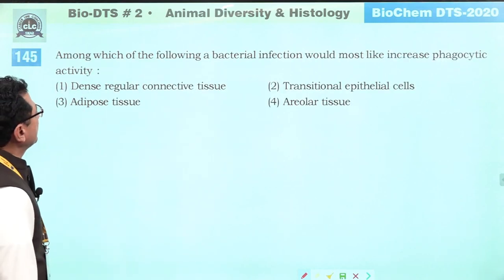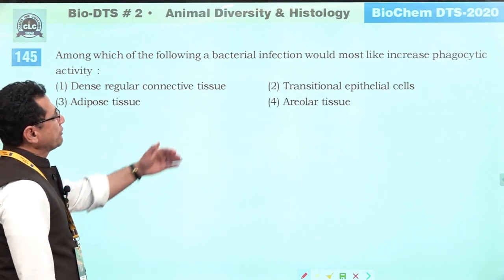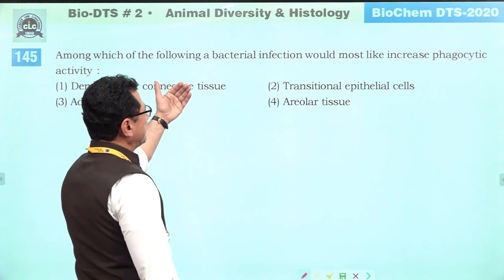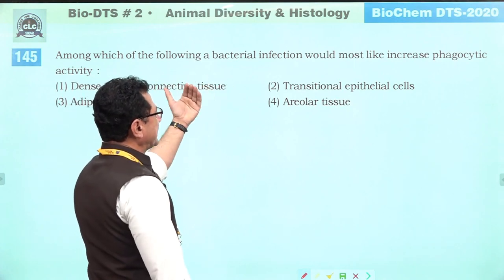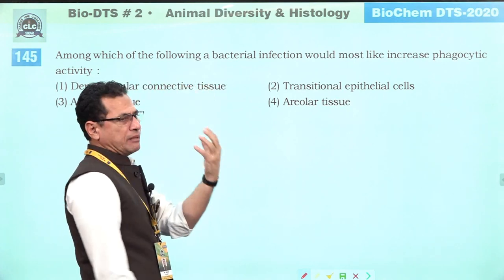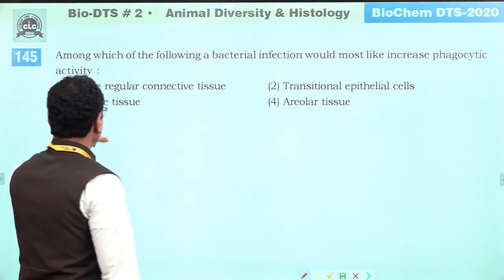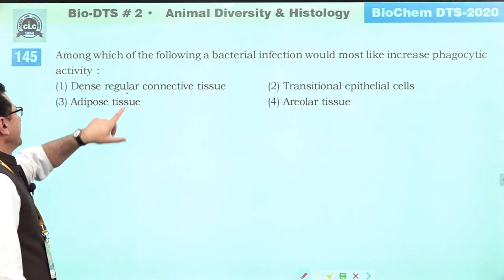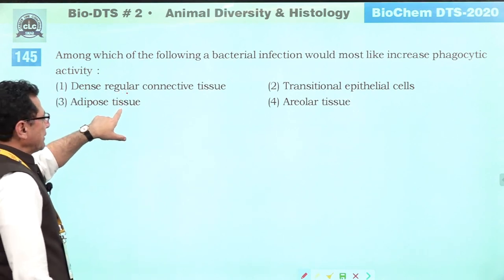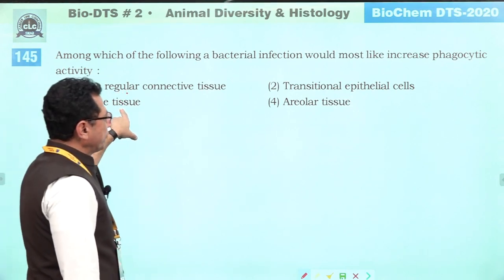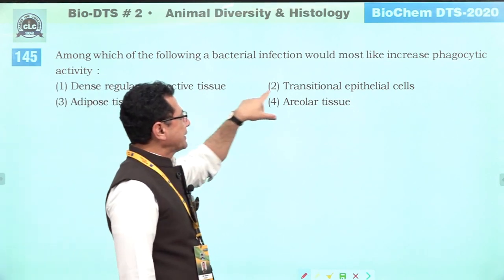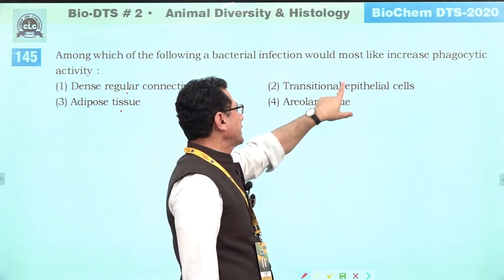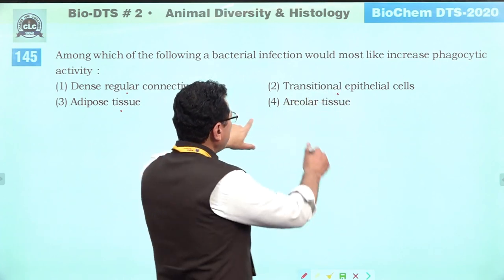Among the following, a bacterial infection would most likely increase phagocytic activity where macrophages are present. Macrophages are not in dense regular connective tissue, not in adipocytes, not in transitional epithelium. They are found in loose connective tissue.